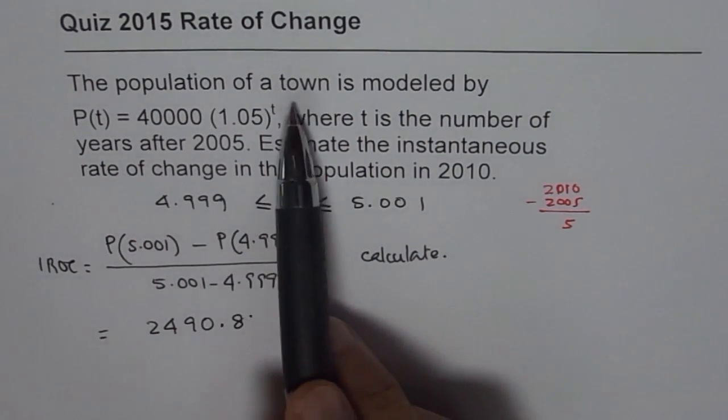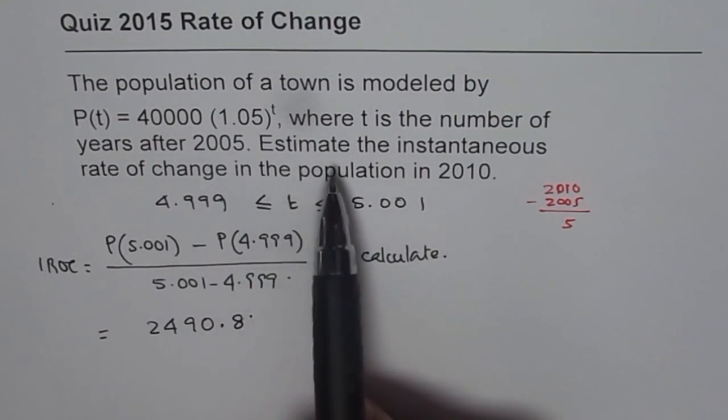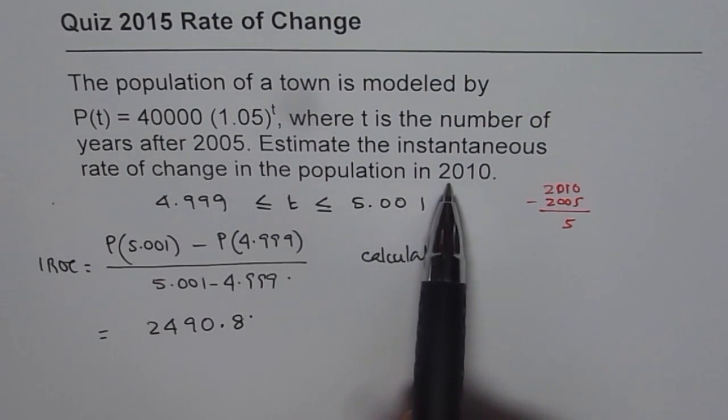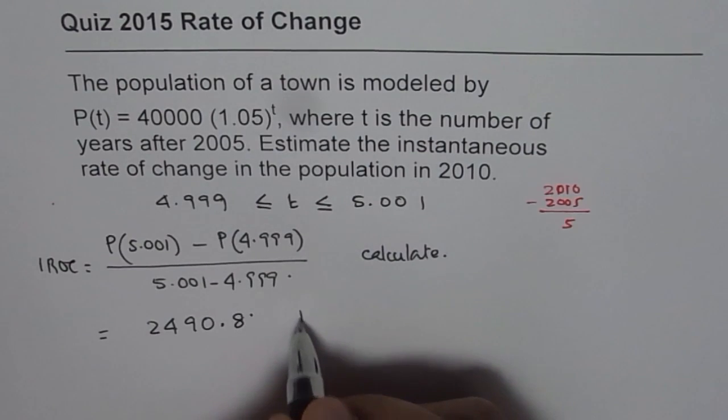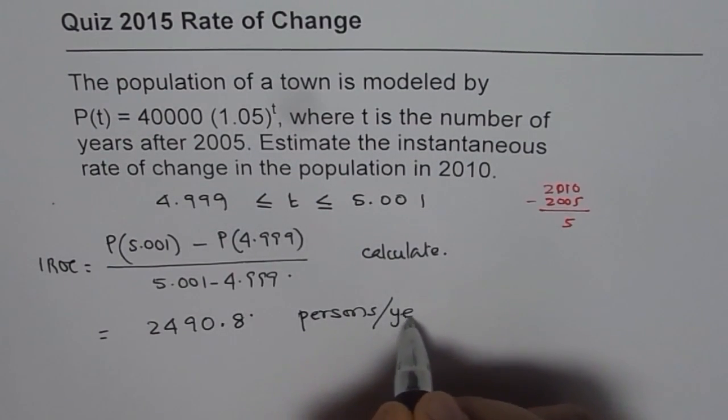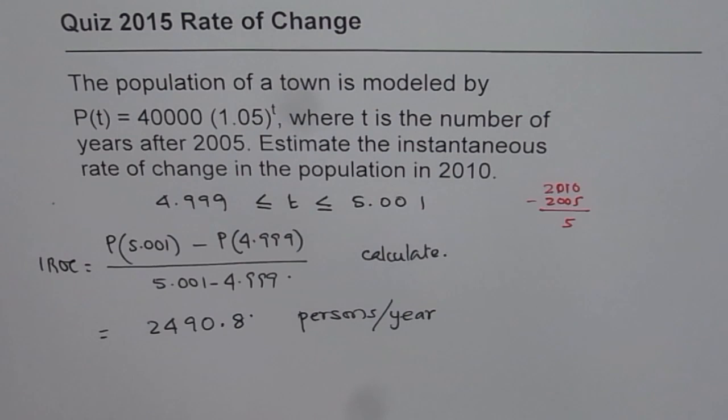It says the population of the town is modeled by this, where t is number of years, estimate instantaneous rate of change in population in 2010. So what is this rate of change? Rate of change is in persons per year. So that is the unit. But you cannot have it in decimals. That is the whole idea.